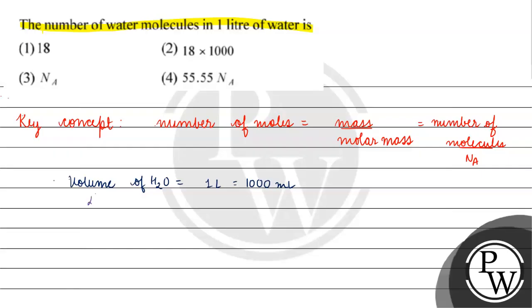And density of water is basically 1 gram per ml.